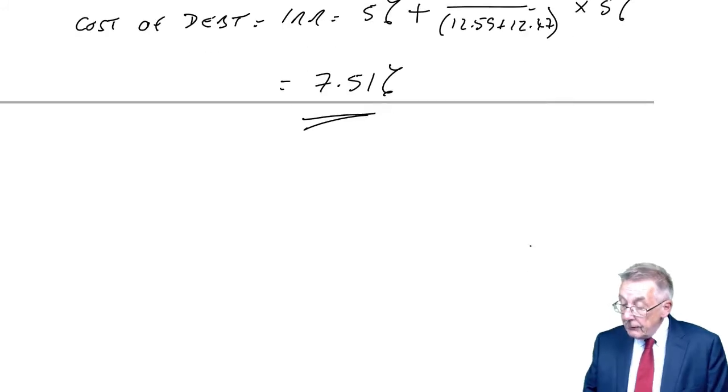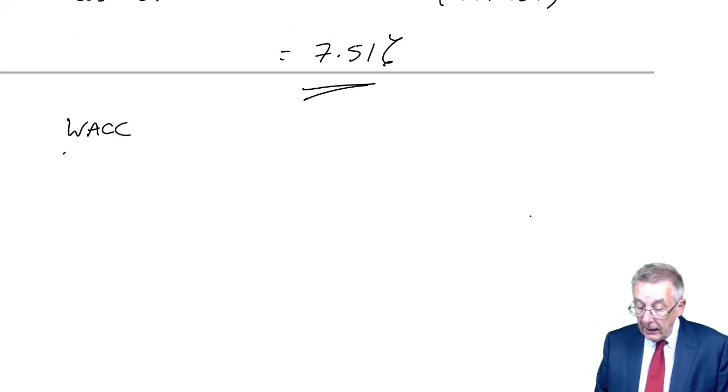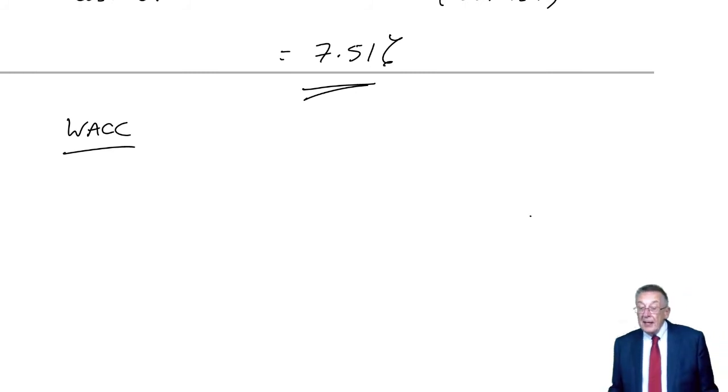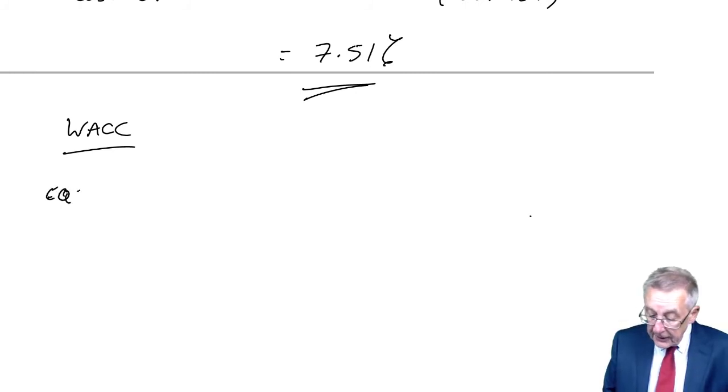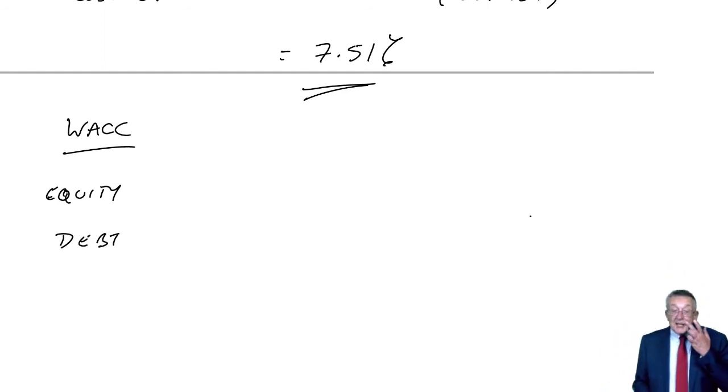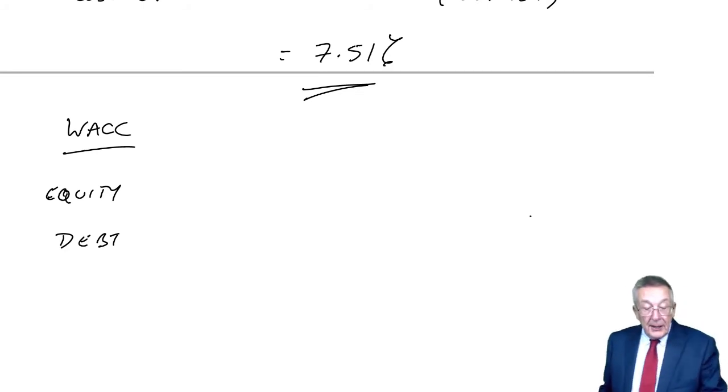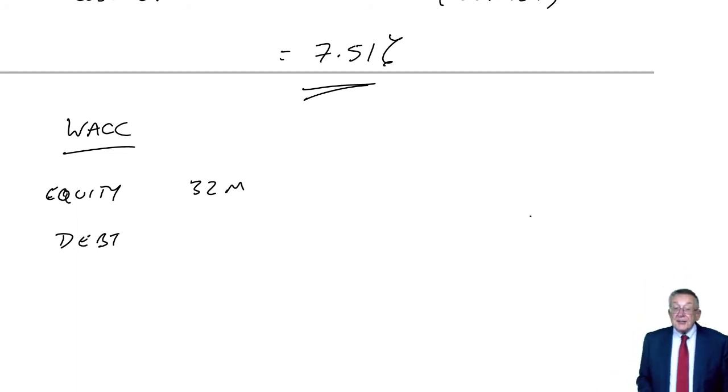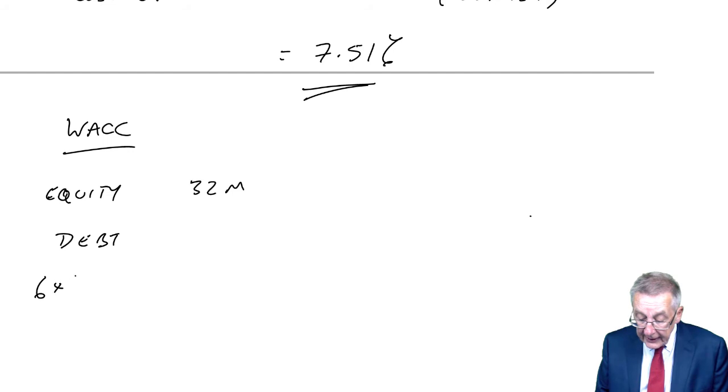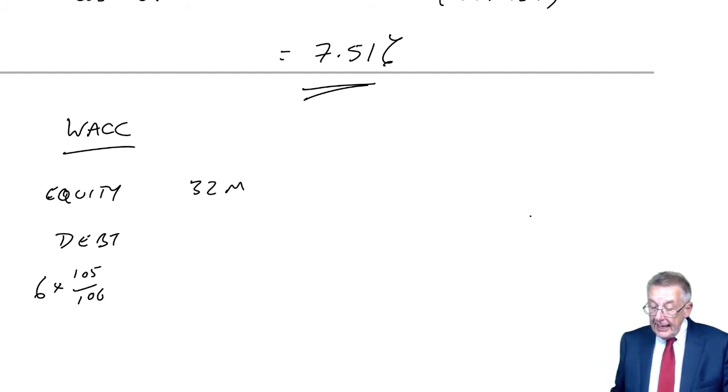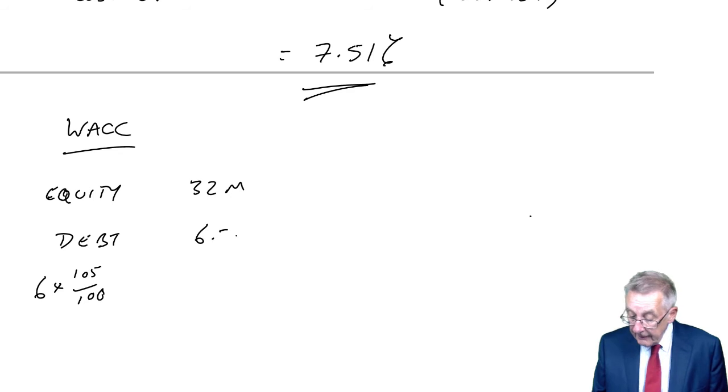Finally, though, the weighted average, which can never really be any harder than it was last time. The weighting, the total market values of equity and debt. Equity with 10 million shares at 320 ex div. So 10 million at 320 is 32 million. Debt 6 million nominal at 105 per hundred is 6.3 million. So the total market value 38.3.